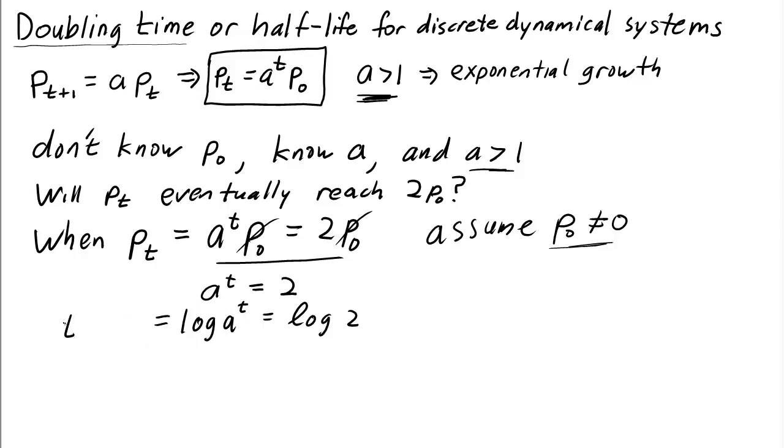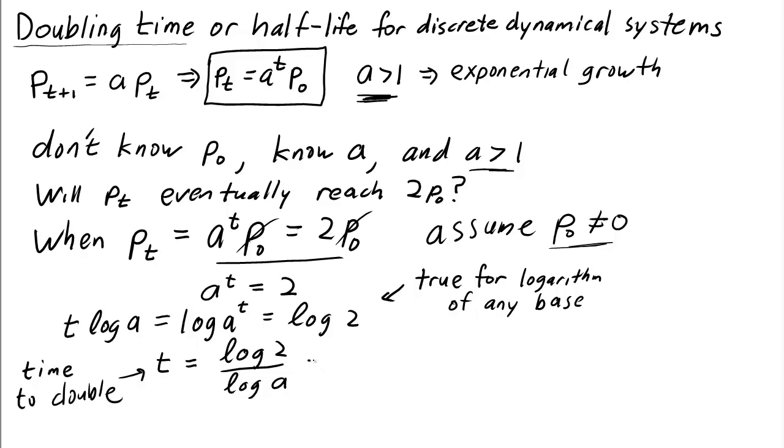Now you have to remember your rules for logarithms and realize that we can bring down this t. Log of a to the power of t is the same thing as t times log of a. This is true for any base logarithm. So we can divide both sides by log of a to calculate that the time it takes to double will be log 2 divided by log a. This is the time to double. We can call this time t sub double.